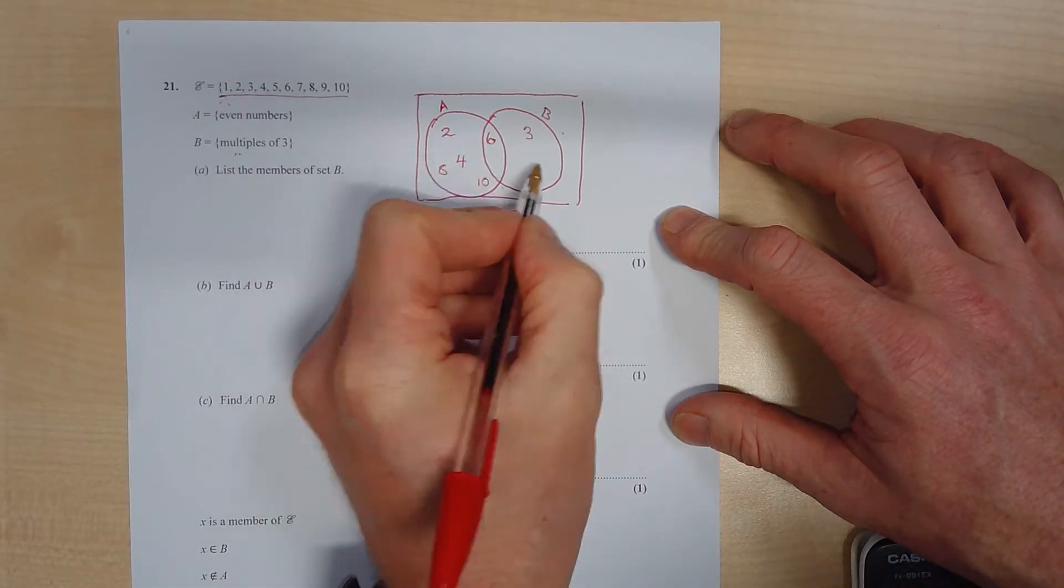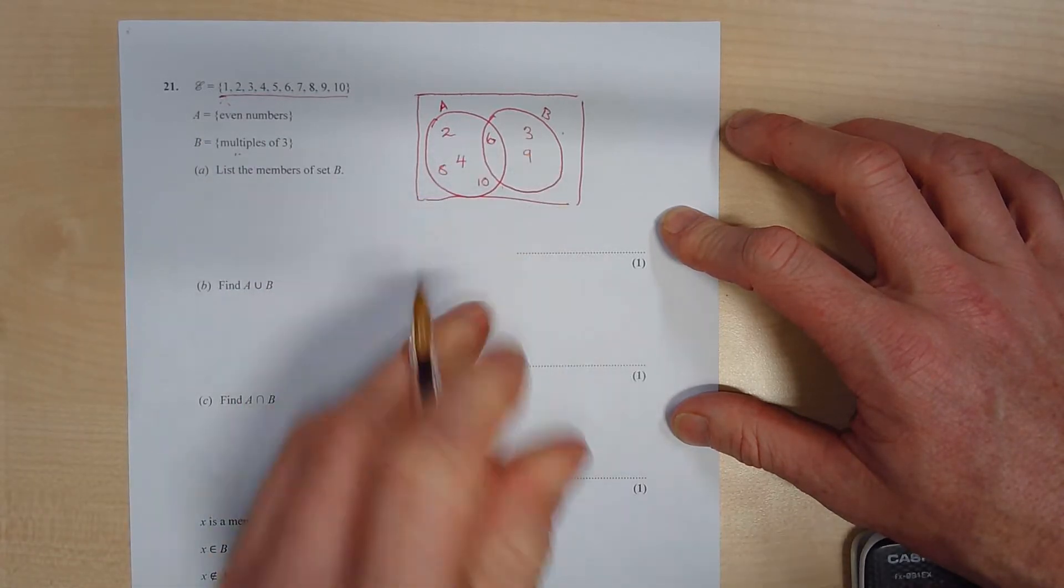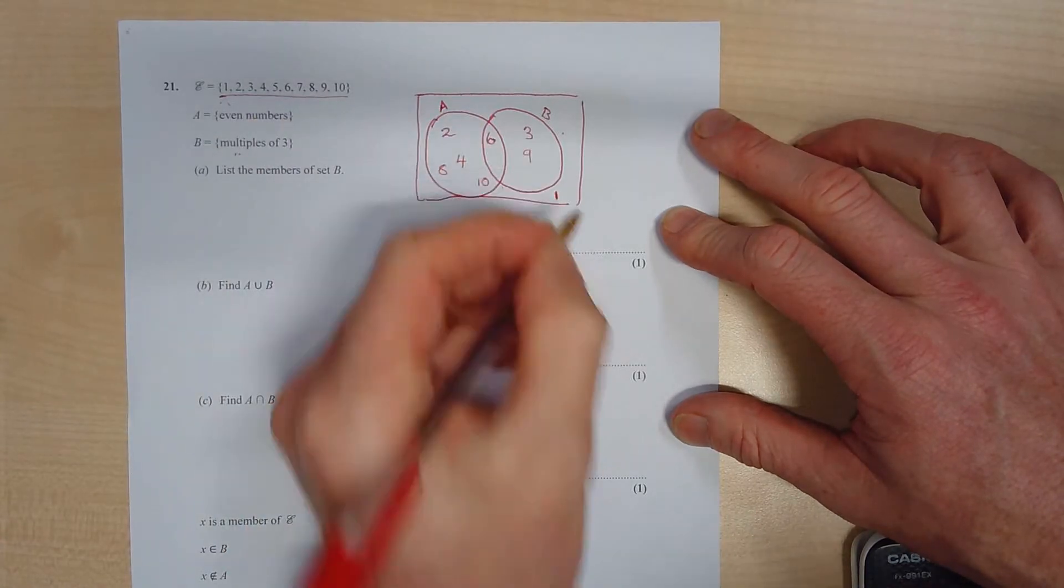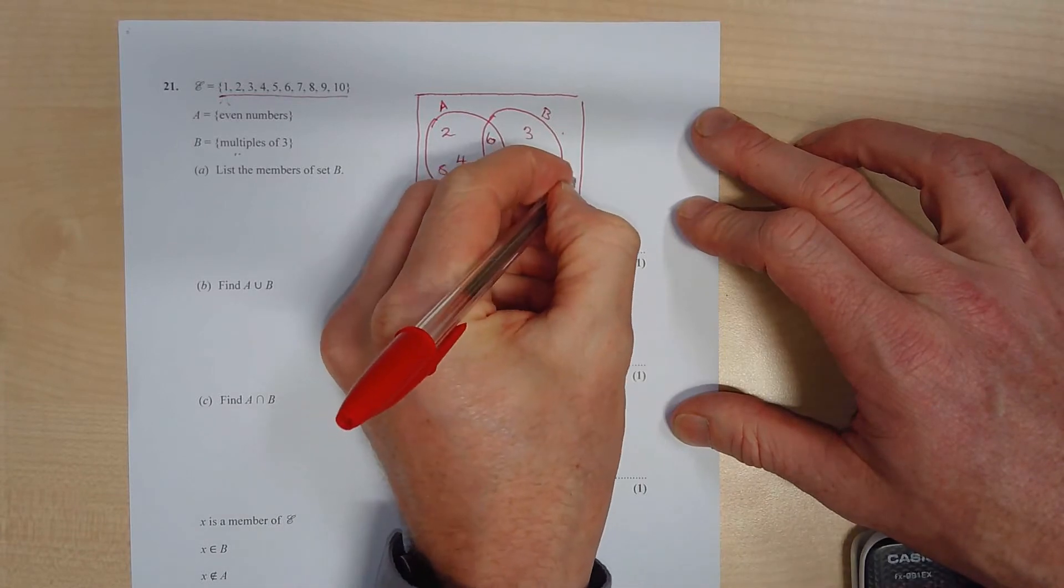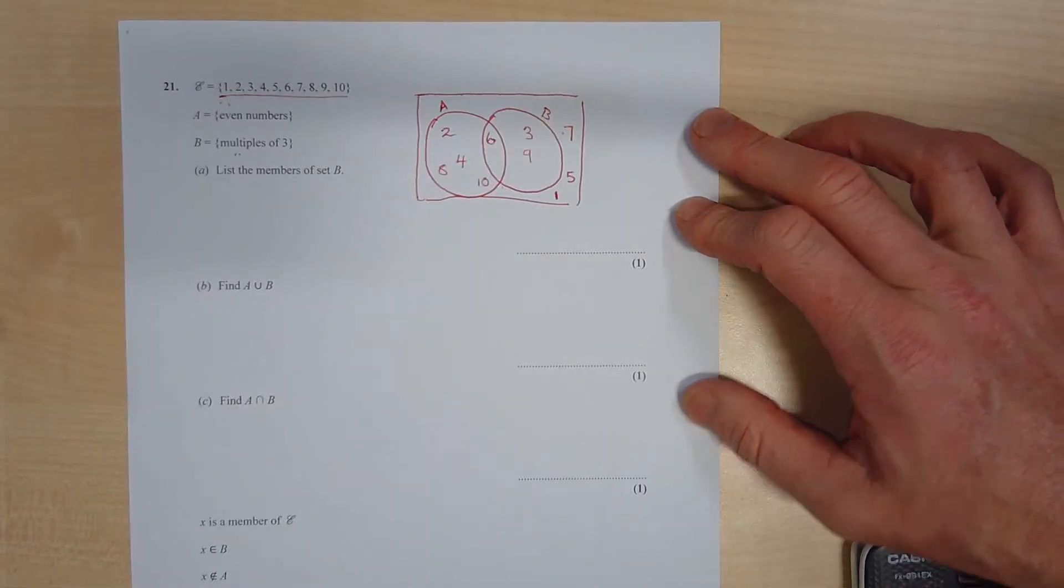And the multiples of 3, that's going to be 3, 6 we've already got, 9, and that's that. Which leaves some that are neither, so we've got these go on the outside. So we've got 1, 5, and 7.